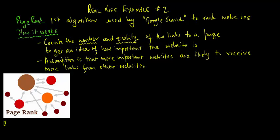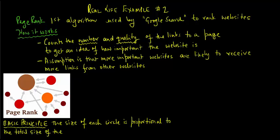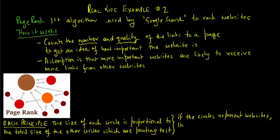In the diagram above, let's highlight the underlying principle. The size of each circle is proportional to the total size of the other circles which are pointing to it. Essentially, if the circles represent websites, then the larger the circle, the larger the page rank.